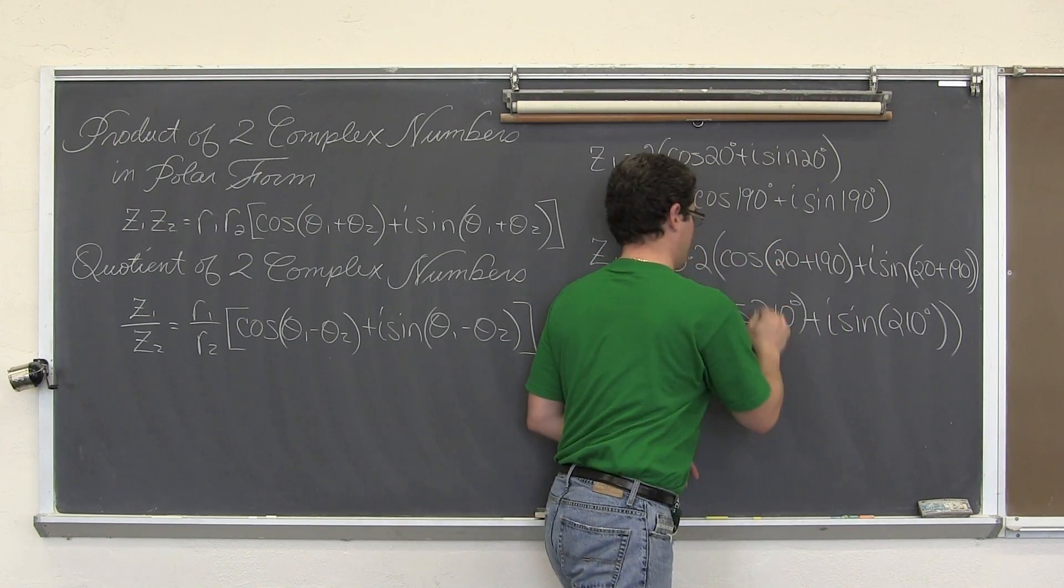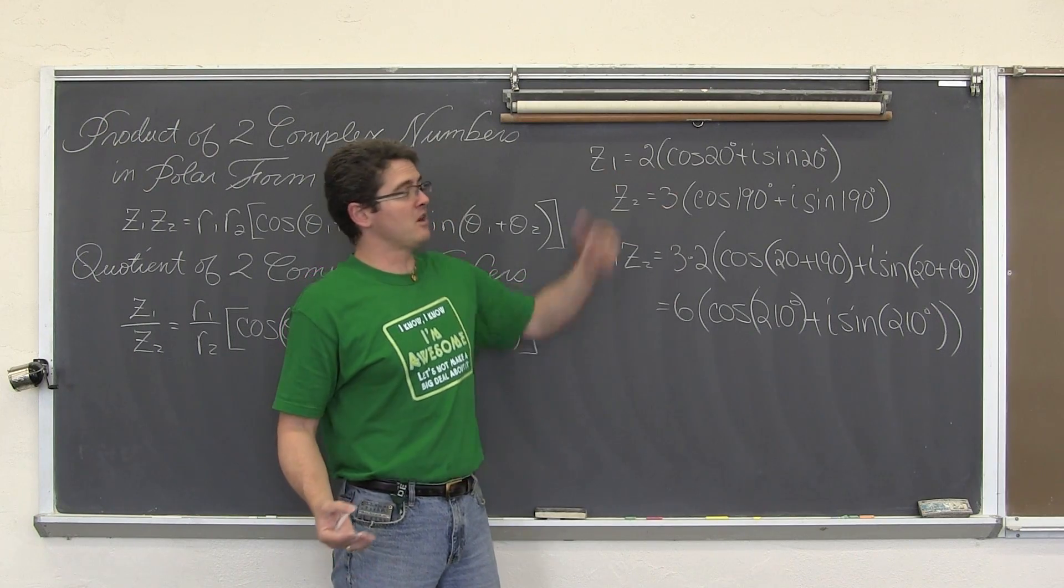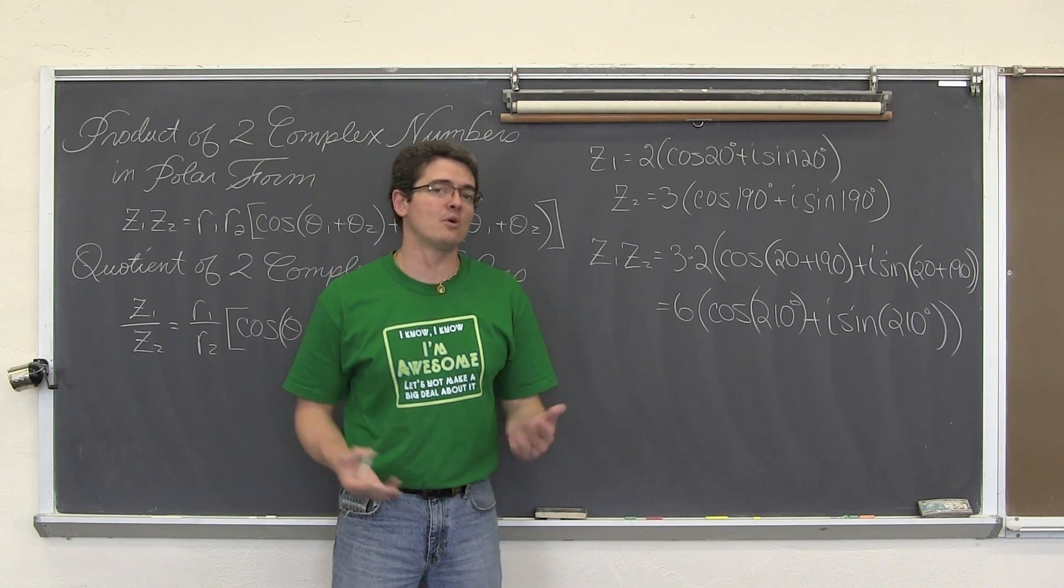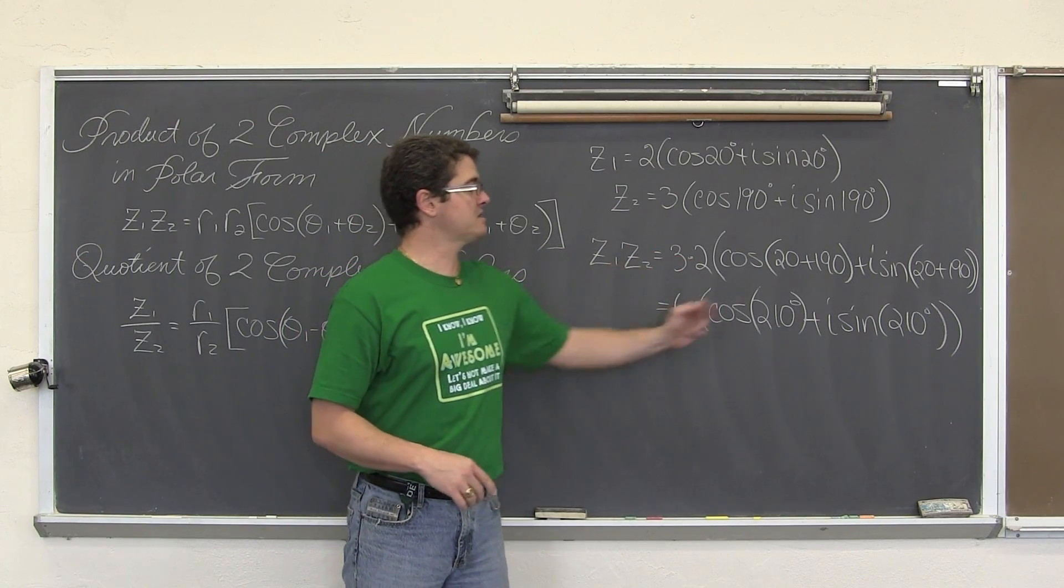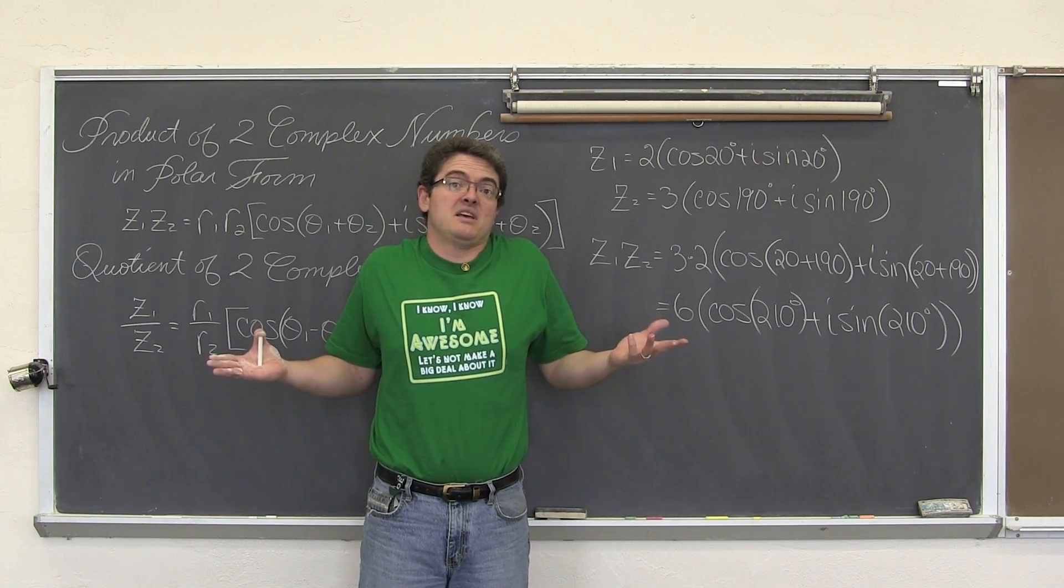That's pretty much it. If you want to multiply two complex numbers in polar form, multiply the radiuses and add those angle measures. That's it.